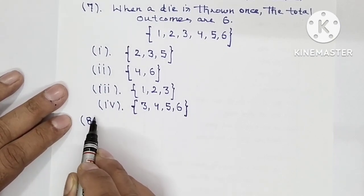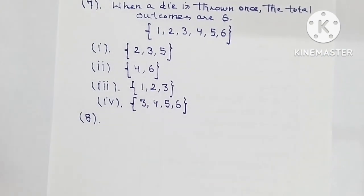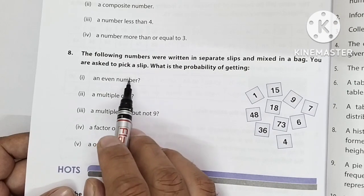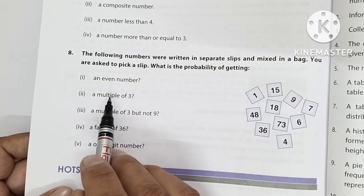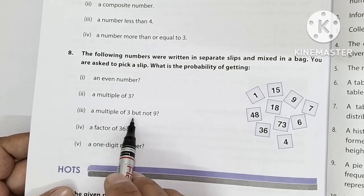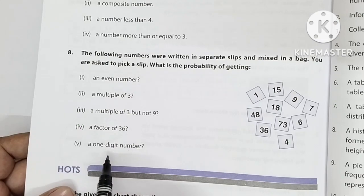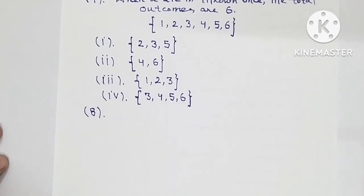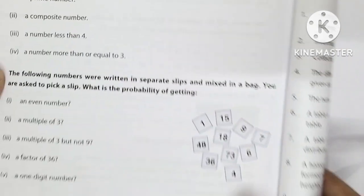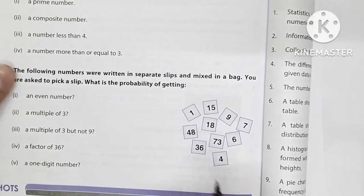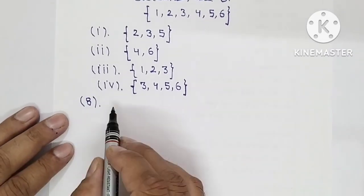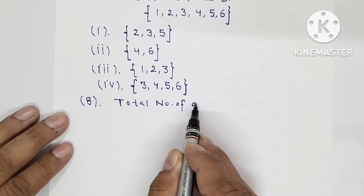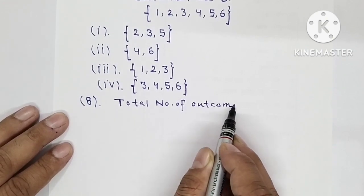In this video I am also doing question number 8's solution. The following numbers are written on separate slips and mixed in a bag. You are asked to pick up a slip. What is the probability of getting an even number, a multiple of 3, a multiple of 3 but not of 9, a factor of 36, and a 1-digit number? Total numbers are 10, so the total number of outcomes is 10.